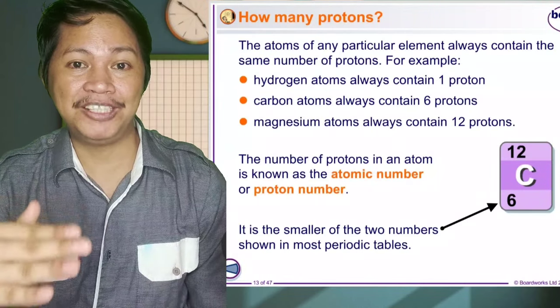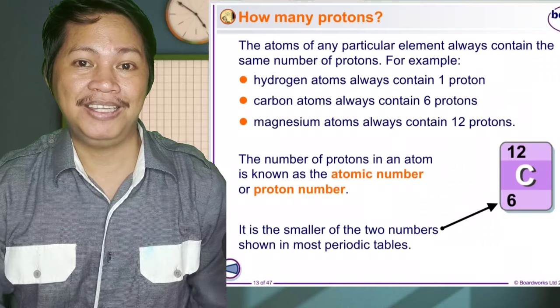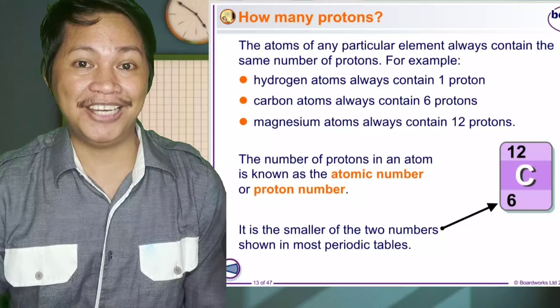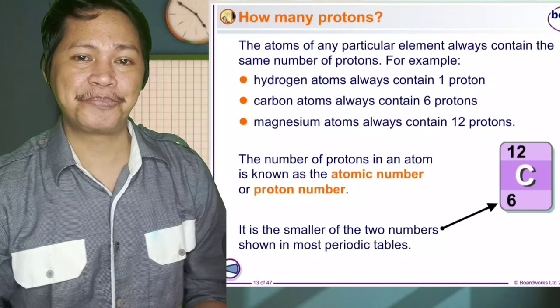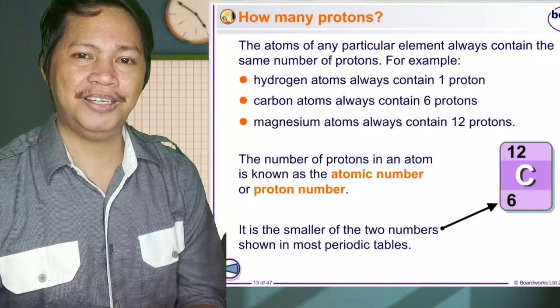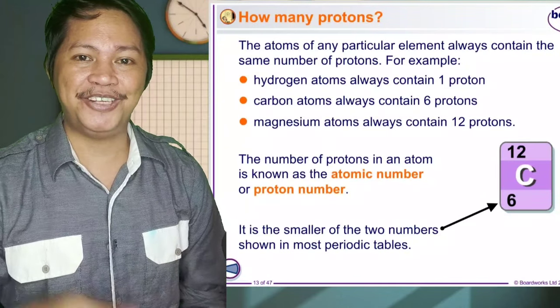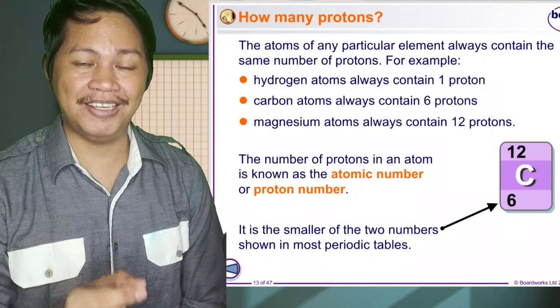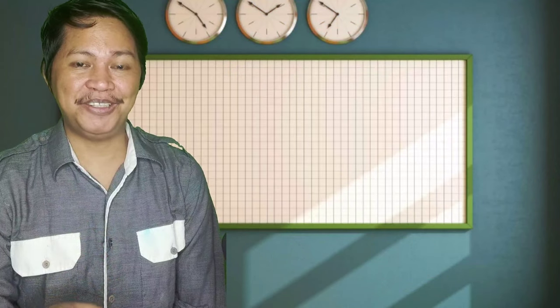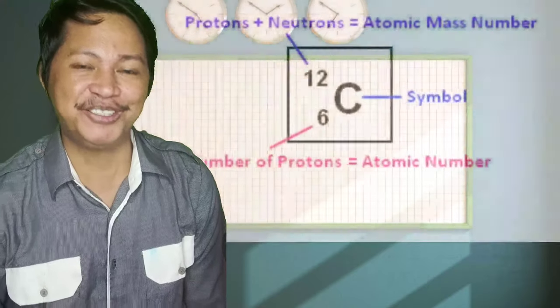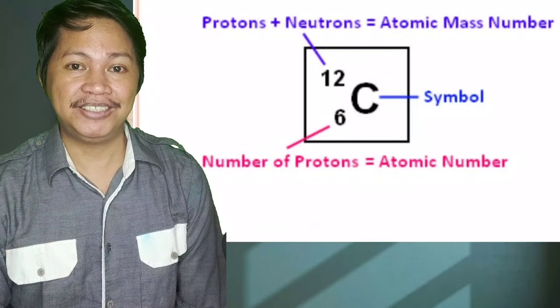And the number written above the symbol is the atomic mass. Sometimes in the book, the atomic number is represented by Z, and for atomic mass, it's capital A. How do you know class if that is atomic number? It's very easy because atomic number is the smaller number shown in the periodic table.